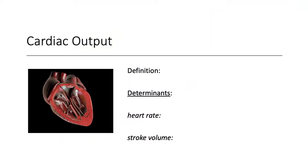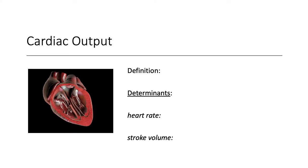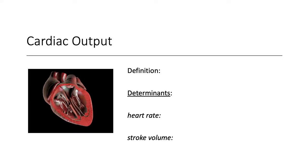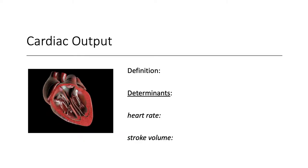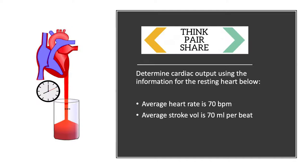Cardiac output is the volume of blood the heart pumps in one minute — typically abbreviated CO. That is a product of heart rate, which is beats per minute, and stroke volume, which is the blood pumped from each ventricle per beat. The average resting heart rate is about 70 beats per minute and the average stroke volume is around 70 mL per beat. Think about what cardiac output would be given these two pieces of information.